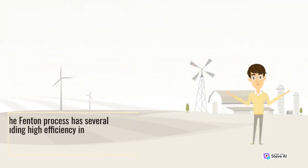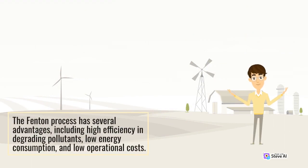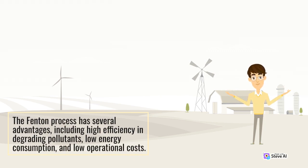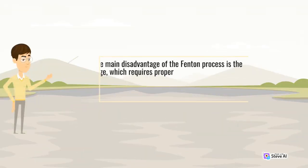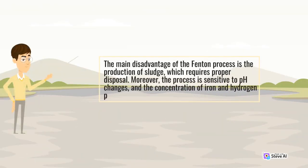The Fenton process has several advantages, including high efficiency in degrading pollutants, low energy consumption, and low operational costs. The main disadvantage of the Fenton process is the production of sludge, which requires proper disposal.